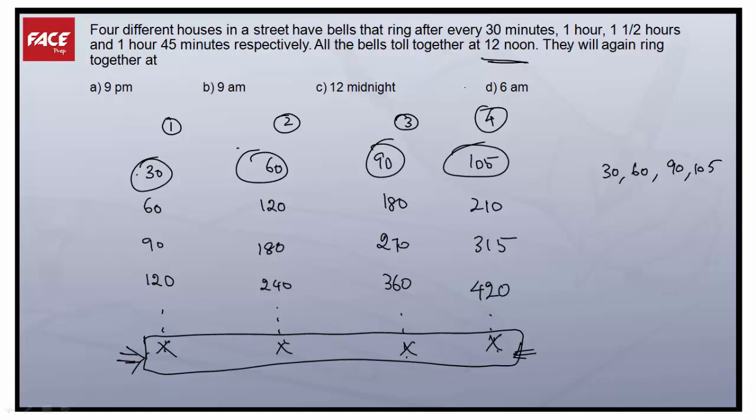So they're asking, they'll again ring together. After 12 noon, immediately have to check when they are ringing together. So it means what? It's least common multiple. We have to find the common multiples of 30, 60, 90, 105. They're asking when immediately after 12 noon they'll ring together. So we have to find the immediate common multiple, that is the least common multiple of 30, 60, 90, 105.